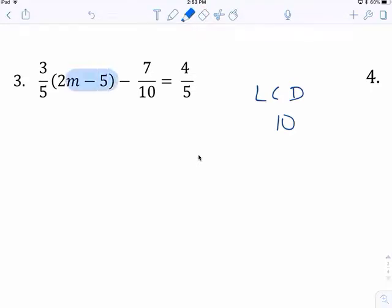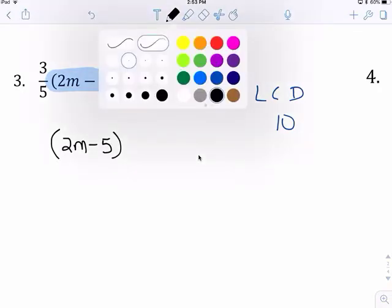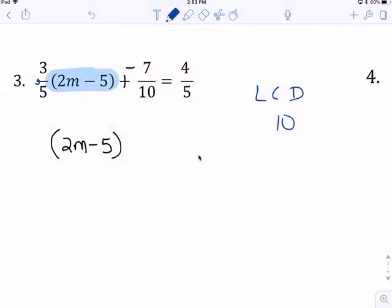This is protected right here. So, 2m minus 5. Make sure additive inverse. Make sure you times 10 here. Times 10 here. Times 10 here. Makes it 2. 2 times 3 is 6. That's a negative 7. That's an 8.